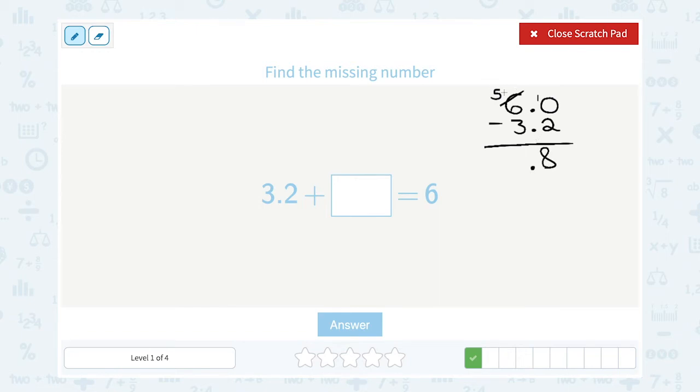In my ones place, I now have 5 minus 3, and that gives me 2. Okay, so the missing number would be 2.8.